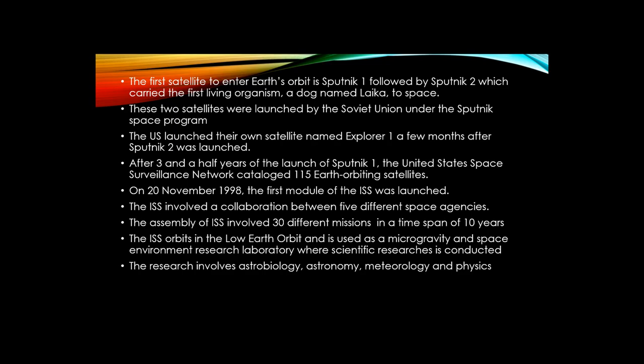On the 20th of November 1998, the first module of the ISS was launched. The production of the ISS involved a collaboration between five different space agencies, and the assembly of the ISS involved 30 different missions in a time span of 10 years.